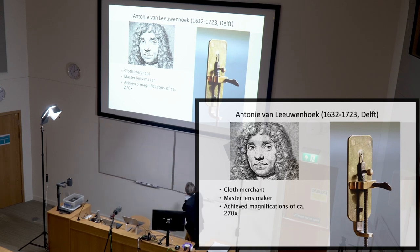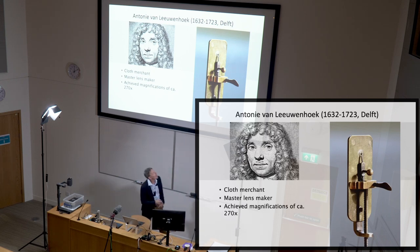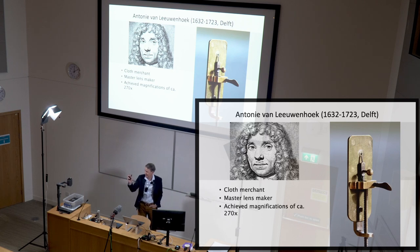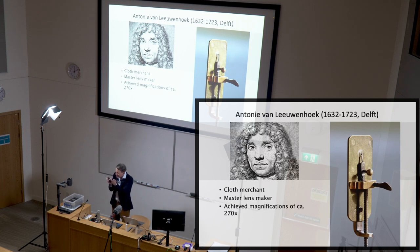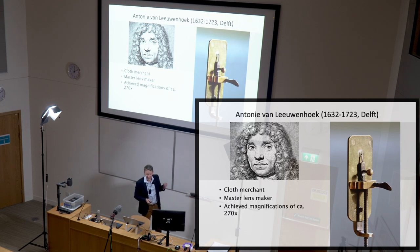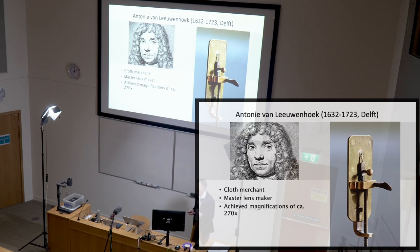The instruments he built were essentially a brass plate containing a small hole, in which he placed a tiny lens just a few millimeters or even a millimeter in diameter. As you know, the higher the curvature and the smaller the radius of the lens, the higher the magnifying power. He was the very best at making these lenses for over a hundred years — nobody could match him — and with these instruments many discoveries were made.